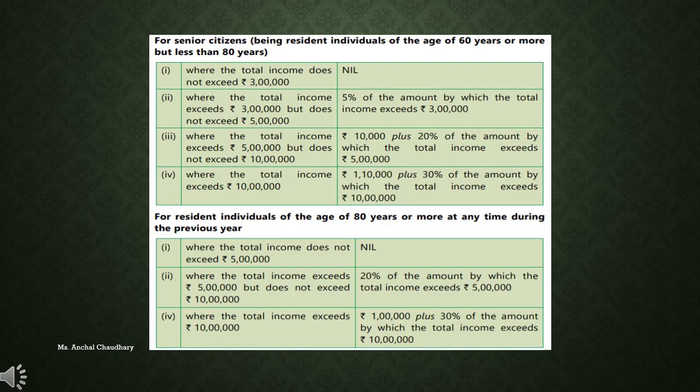There is a third situation when a person is more than 80 years old — a super senior citizen. In that situation, income is exempted up to ₹5 lakh, so you don't have to pay any tax up to ₹5 lakh. Between ₹5 lakh and ₹10 lakh income, you pay 20% tax. When total income exceeds ₹10 lakh, you pay 30% tax. This is how you calculate the tax rates for individual taxable income.